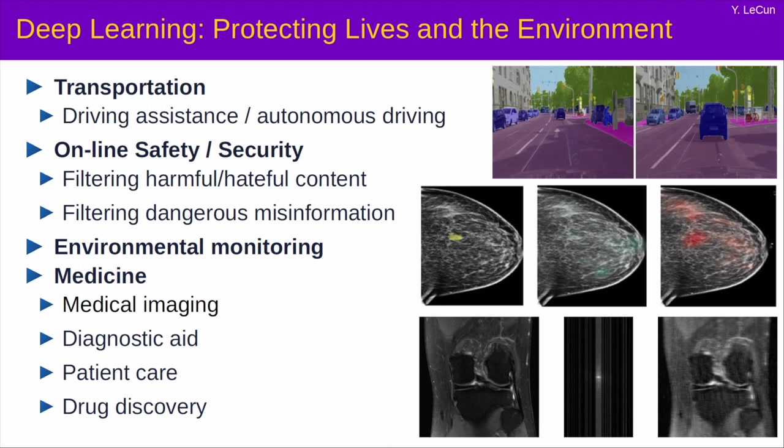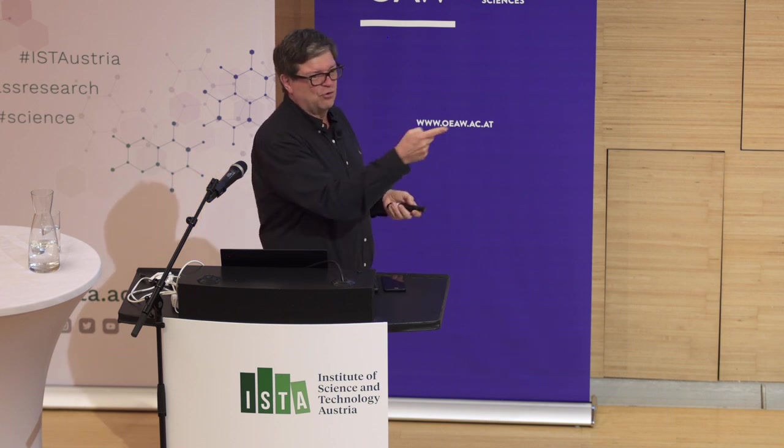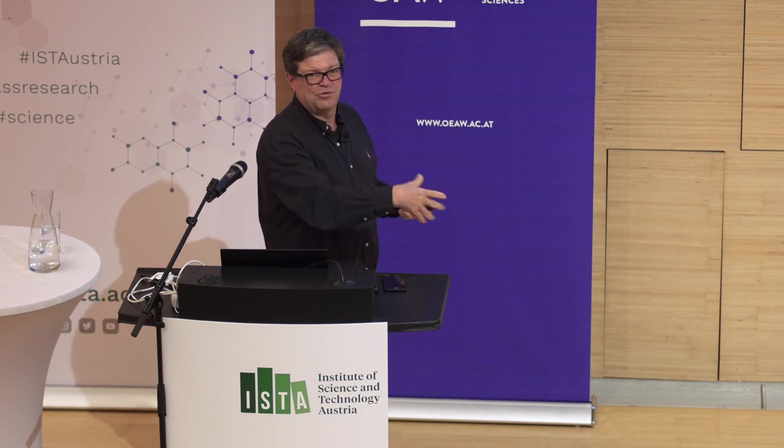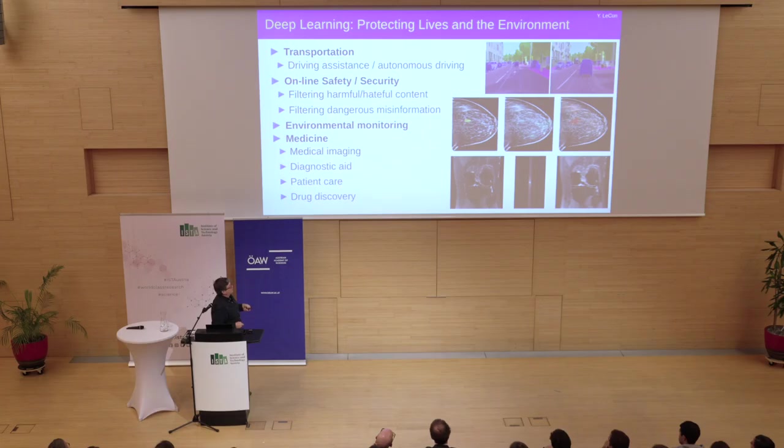A lot of usage in online safety and security for filtering harmful or hateful content and dangerous misinformation, environmental monitoring, a lot of applications. There is now applications on mobile phones where you can take a picture of the tail of a whale and the system will tell you, this is George. It will recognize the individual whale based on the shape of the tail. You can also point it at a plant that will tell you the species of the plant from the shape of the leaves or an insect or a bird or whatever. And of course, a lot of applications in medicine and medical imaging and diagnostic assistance, patient care and drug discovery, which is sort of a really exciting new field.